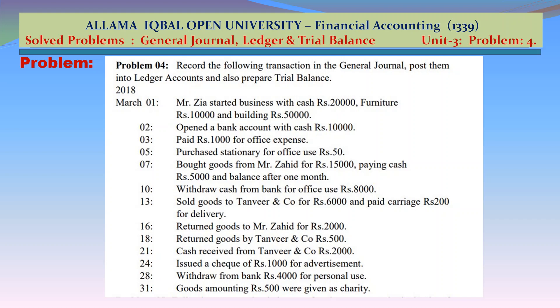March 13: sold goods to Tanvir & Company for Rs 6,000, and paid carriage Rs 200 for delivery. March 16: returned goods to Mr. Zahid for Rs 2,000. March 18: returned goods by Tanvir & Company, Rs 500. March 21: cash received from Tanvir & Company, Rs 2,000.